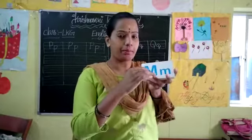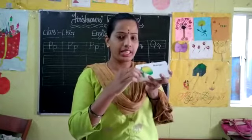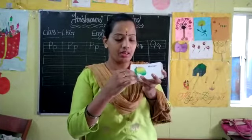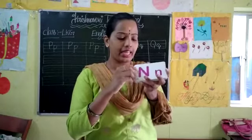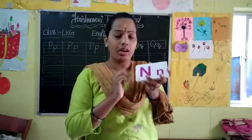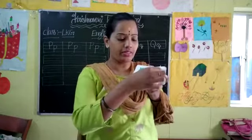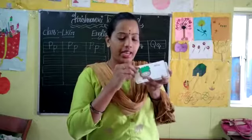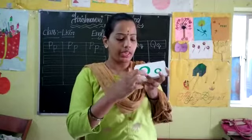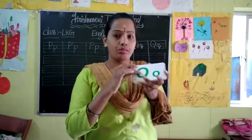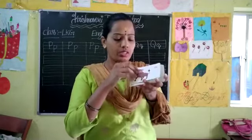And next letter is M. Capital M, small m. M for mango. See here, M for mango. And next letter is N. Capital N, small n. N for nest. N for nest.